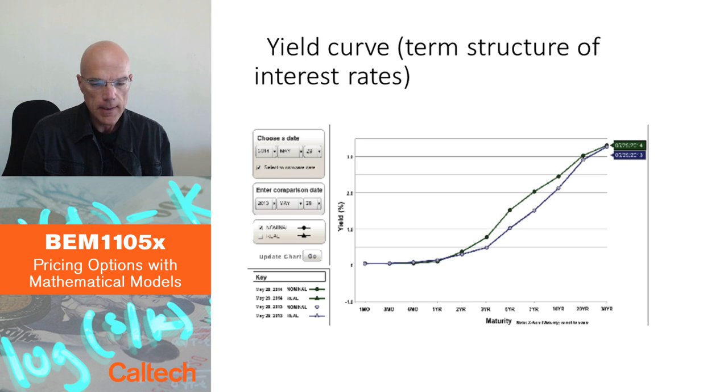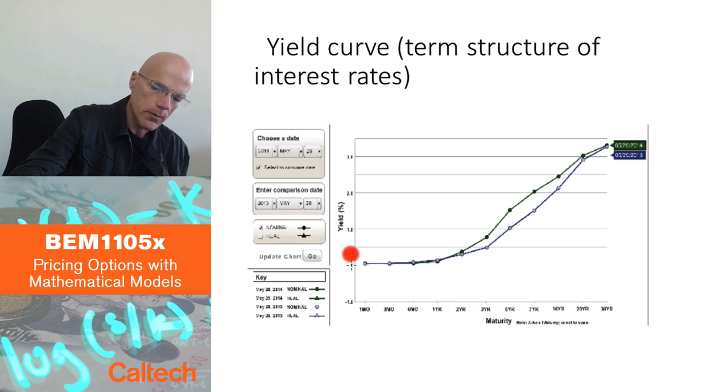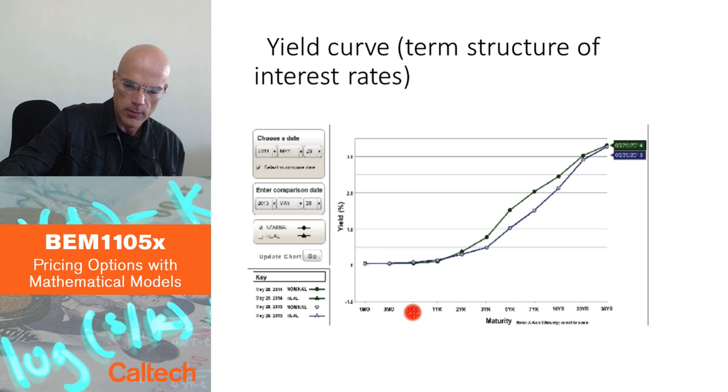This here is a yield curve. So it's a different curve. Now on the y-axis, I have the yield, and on the x-axis, I have maturity.